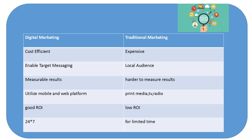The last point is that digital marketing is available 24 hours, 7 days a week, whereas traditional marketing depends on the companies providing advertising, like TV shows, print media such as newspapers and magazines, so it is available for limited time only. Digital marketing, which includes social, mobile, and web platforms, is basically available 24 hours, seven days a week.